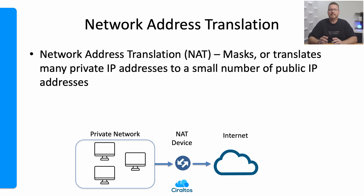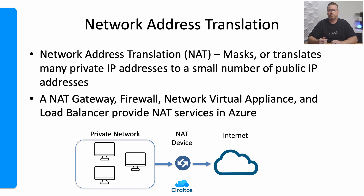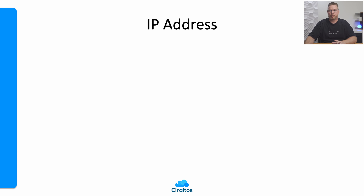That's where Network Address Translation, or NAT, comes in. NAT is a way of masking or translating many — like hundreds or even thousands — of private IP addresses behind a small number of public IP addresses. This limits public IP address exhaustion and provides security by controlling client access to the internet. In Azure, we can leverage NAT on multiple resources such as a NAT gateway, Azure Firewall, a network virtual appliance, or a load balancer.